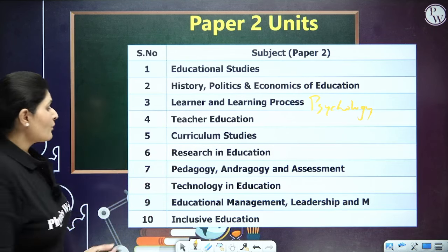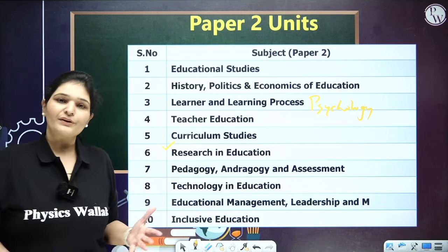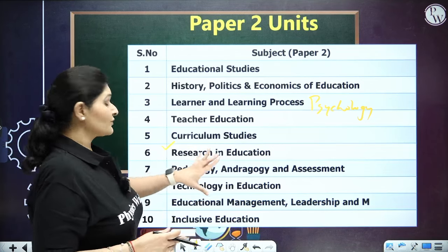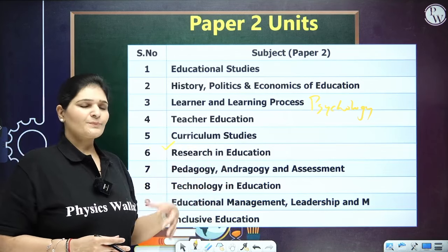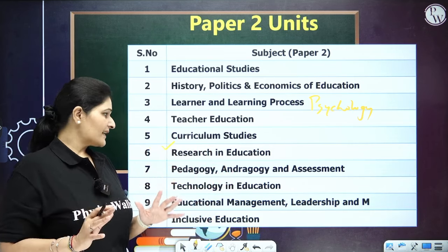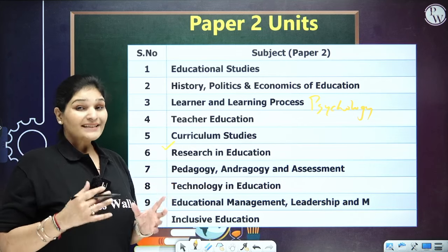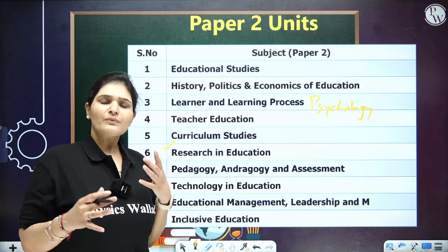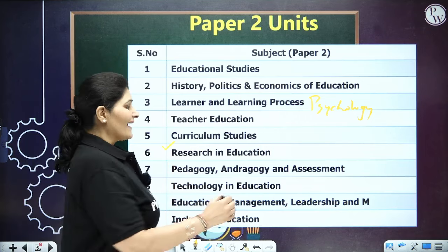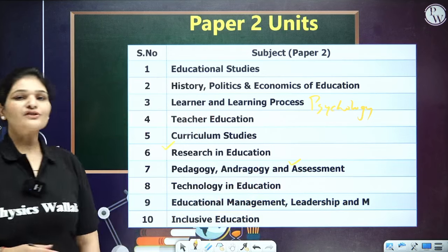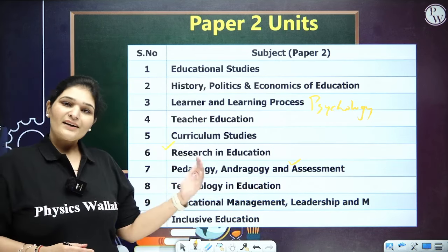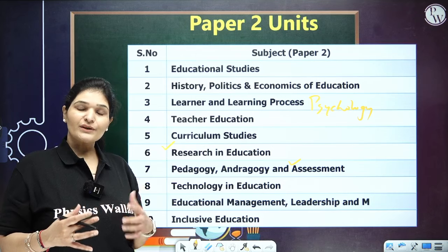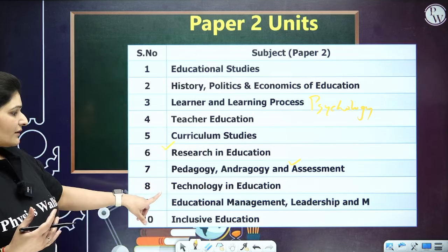Unit 6 is Research in Education — types of research, sampling, different experimental designs, methods, data, statistical analysis, and content analysis of qualitative data. Unit 7 is Pedagogy, Andragogy and Assessment — art and science of teaching, art and science of teaching adults, and different assessment techniques. Unit 8 is Technology and Education — apps, websites, and initiatives in higher or school education.